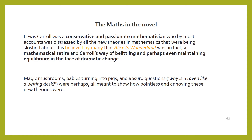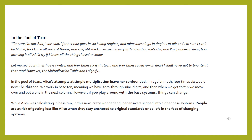The maths in the novel: Lewis Carroll was a conservative and passionate mathematician, who by most accounts was distressed by all the new theories in mathematics being proposed at the time. It is believed by many that Alice in Wonderland was, in fact, a mathematical satire — Carroll's way of belittling these new ideas. Magic mushrooms, babies turning into pigs, and absurd questions like 'why is a raven like a writing desk' were perhaps all meant to show how pointless and annoying these new theories were.